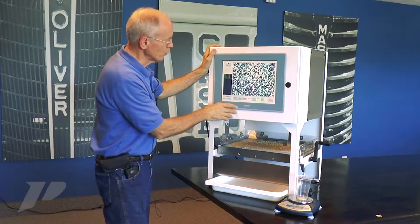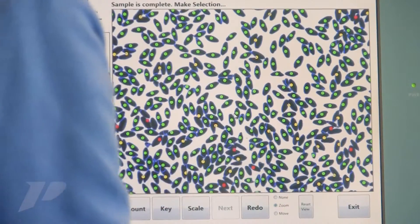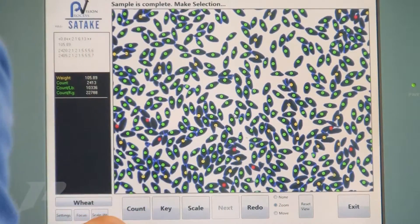The very small fragments we ignore, because we have a threshold to ignore small things. Half seed or greater will count.